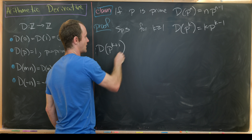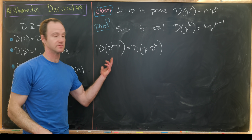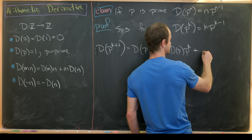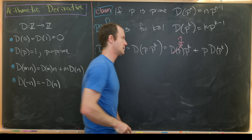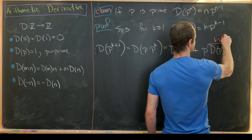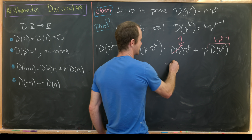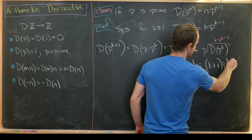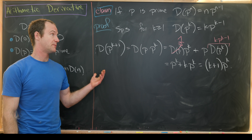For the inductive step, look at d(p^(k+1)) equals d(p · p^k). By the Leibniz rule, that's d(p) times p^k plus p times d(p^k). Using d(p) equals 1 and the induction hypothesis d(p^k) equals k·p^(k−1), we get p^k plus k·p^k, which factors as (k+1)·p^k. So we do satisfy the power rule.